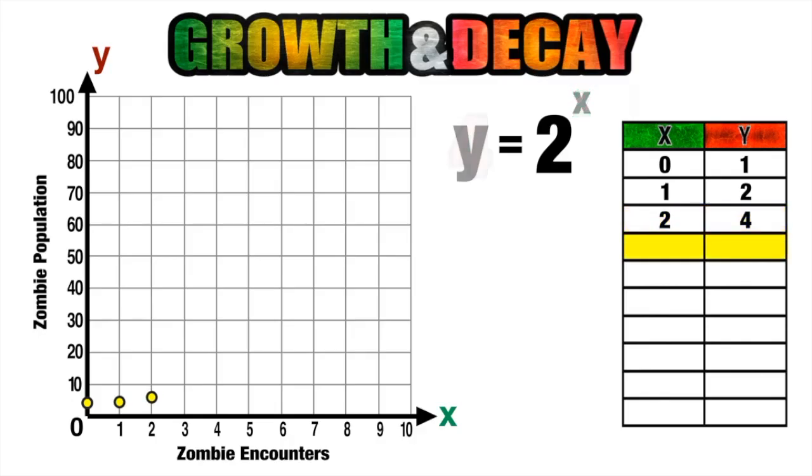After our third encounter, two to the three power is eight. So our zombie population is eight.